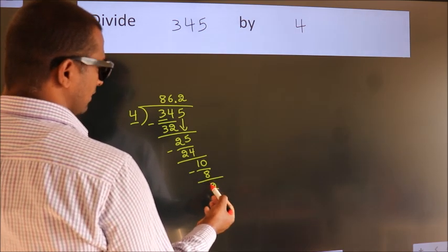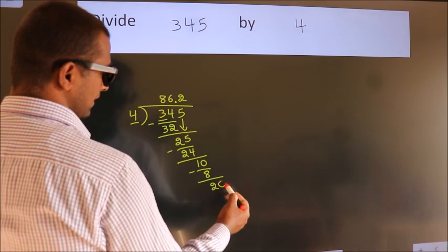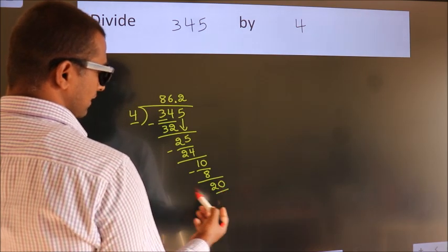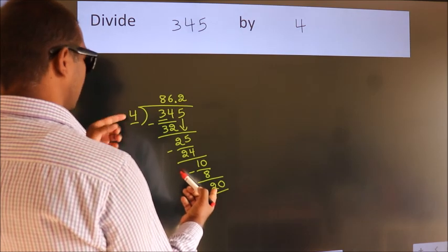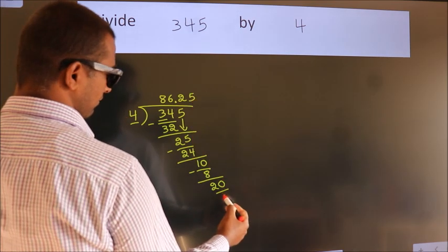After this we already have the decimal, so directly take 0. So 20. When do we get 20 in 4 table? 4 times 5 is 20.